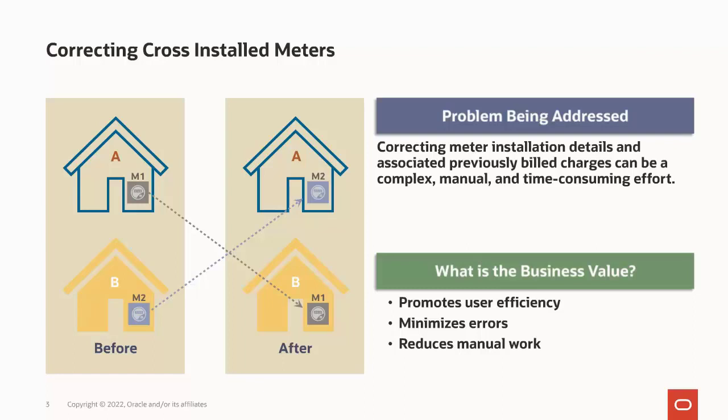In order to correct a cross-installed meter situation in the billing system, the meter installation details will need to be updated to correctly reflect the meter installations in the field. Billing corrections may also need to take place for previously billed charges for the customers involved. The steps required to correct cross-installed meters can be complex, involve quite a lot of manual work, and be time-consuming for a utility's business users. This can easily lead to data entry and online transactional errors, making it even more challenging to resolve correctly in an efficient manner.